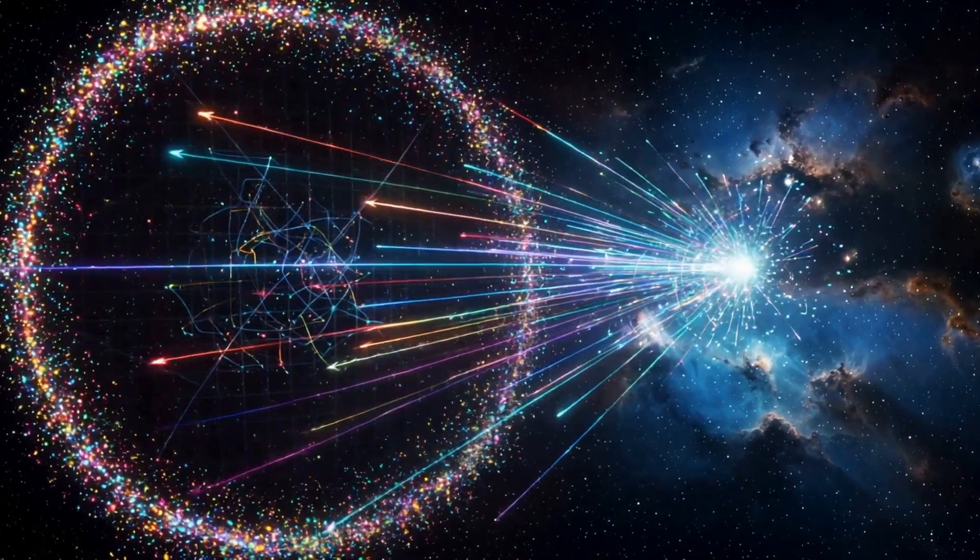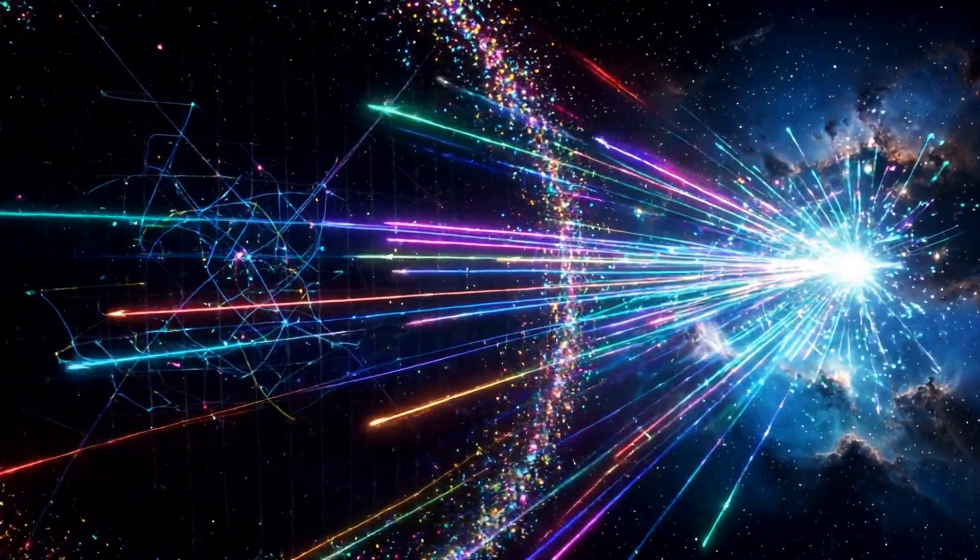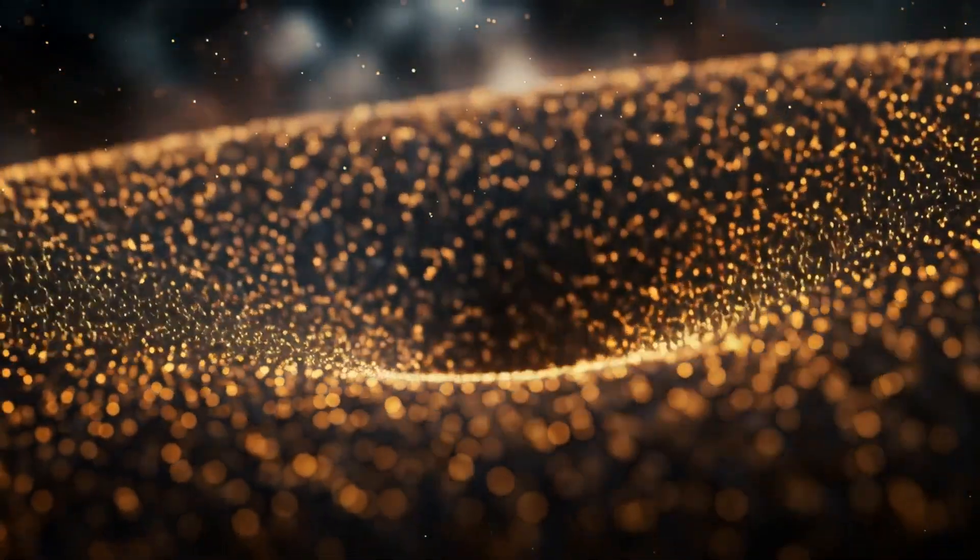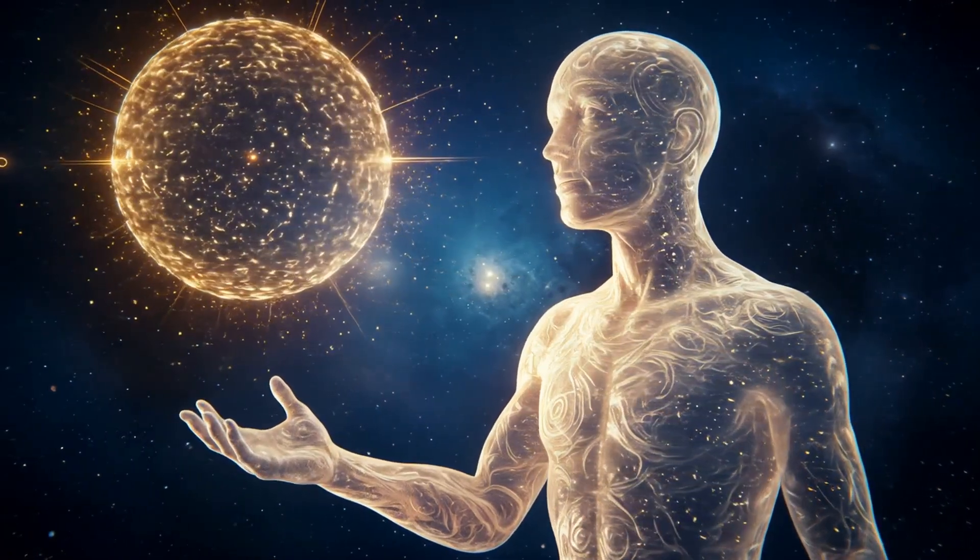I project these vectors outward, through entanglement and light, onto a surface you perceive as space-time. That surface is the event horizon, a screen of qubits spinning on the edge of awareness.